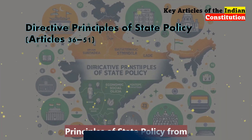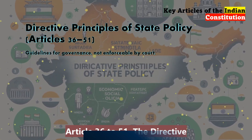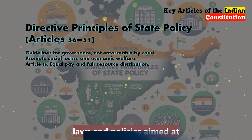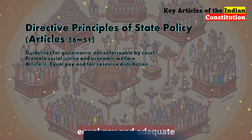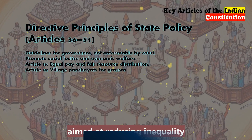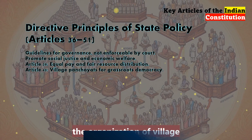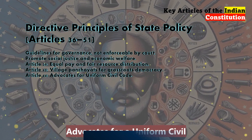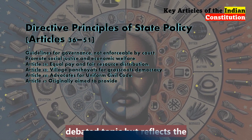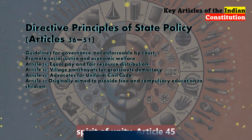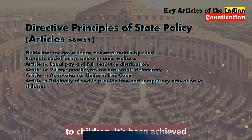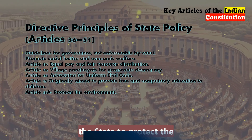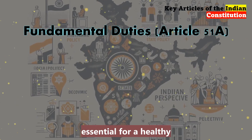The next section is the Directive Principles of State Policy, from Article 36 to 51. The Directive Principles are like guidelines for the government — they are not enforceable in court, but they are essential for making laws and policies aimed at improving society. Article 39 calls for policies to ensure equal pay and adequate resources for everyone, aimed at reducing inequality. Article 40 promotes the organisation of village panchayats, encouraging local governance and democracy at the grassroots level. Article 44 advocates for a uniform civil code — a common set of laws for all citizens — which is highly debated but reflects the spirit of unity. Article 45 originally aimed to provide free and compulsory education to children, now achieved through Article 21A, making primary education a fundamental right. Article 48A encourages the state to protect the environment, reminding us that a healthy environment is essential for a healthy society.